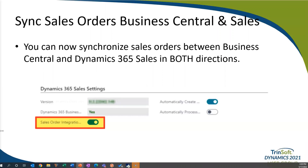With this latest release, there is now the ability to sync sales orders between Business Central and Dynamics 365 Sales. You can synchronize sales orders in both directions. For example, if a customer changes their mind about a product or quantity in Sales, you can automatically process the change in Business Central by archiving the sales document and creating a new one. When price, tax amounts, or expected shipment dates change in Business Central, the changes are automatically synchronized to Sales. To enable bi-directional sync, choose the 'bi-directional sync of sales orders' field on the Dynamics 365 Sales settings page or in the assisted setup.